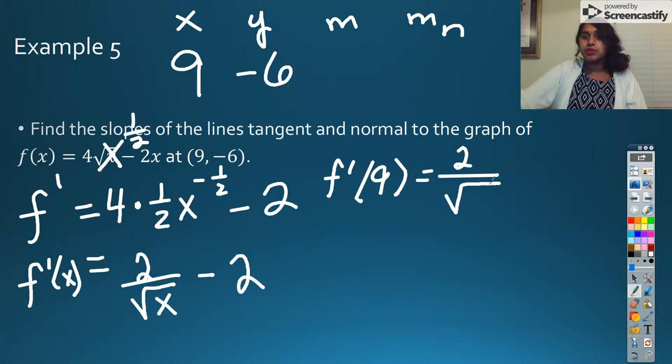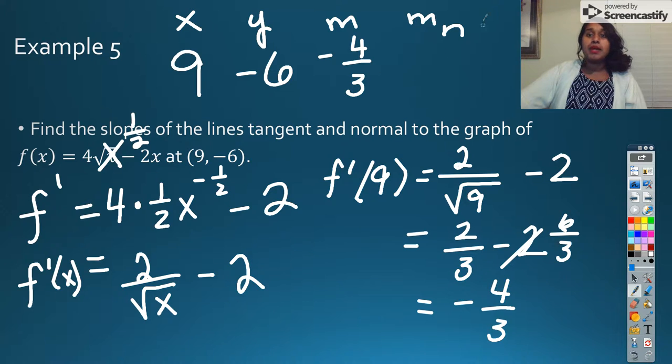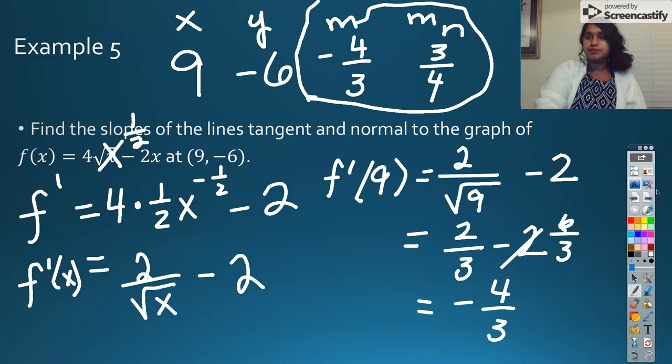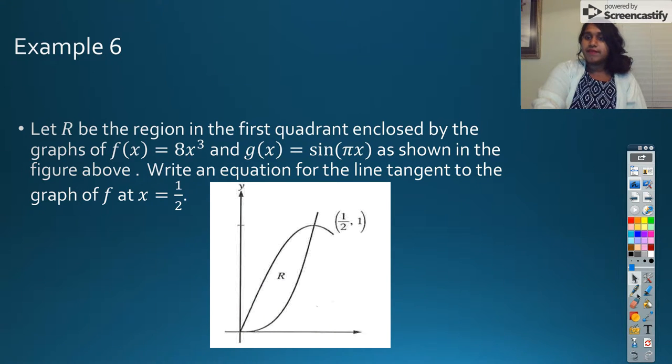So that becomes 2 over the square root of 9 minus 2. Square root of 9 is technically plus or minus 2, but we're going to go ahead and use the positive value, 2 thirds minus 2. And so 2 thirds minus 2 is the same as saying 2 thirds minus 6 thirds. So that's going to be the same as saying negative 4 thirds. So my slope is negative 4 thirds. Therefore, my slope of the normal line has to be the reciprocal. So 3 fourths and technically a negative, but a negative times a negative makes it positive. So here would have been our two answers all the way up here.